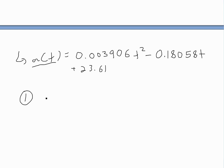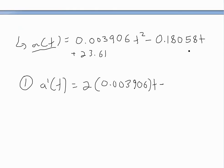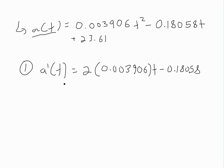have to find out when the derivative is zero. First, let's find the derivative. So a'(t) would equal, using power rule, bring this down: 2 × 0.003906 × t, and then minus 0.18058. This cancels out—the derivative of 23.61 is just zero—so we have this.